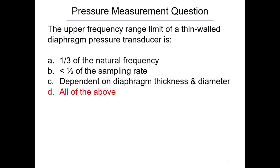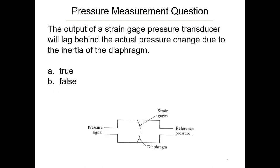So D, all of the above, is the best answer. This next question is from what we just covered: the output of a strain gauge pressure transducer lags behind the actual pressure change due to the inertia of the diaphragm — true or false? Pause it, think about it. Welcome back. It's true.